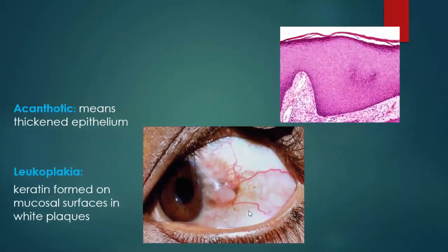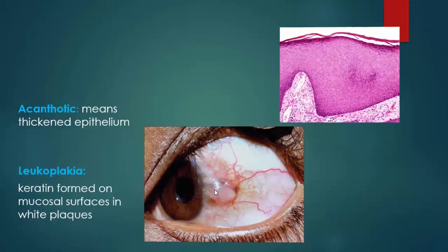The second scientific term is acanthotic, which means thickened epithelium — we can notice that the epithelium here is thickened. The third term is leukoplakia, which is a keratin formed on the mucosal surface in the form of white plaques, such as in this photo.